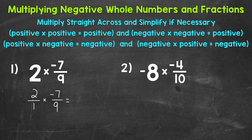So two over one times negative seven ninths — multiply straight across: two times negative seven is negative 14, and one times nine is nine. So we have negative 14 ninths, or negative 14 over nine, which is an improper fraction.